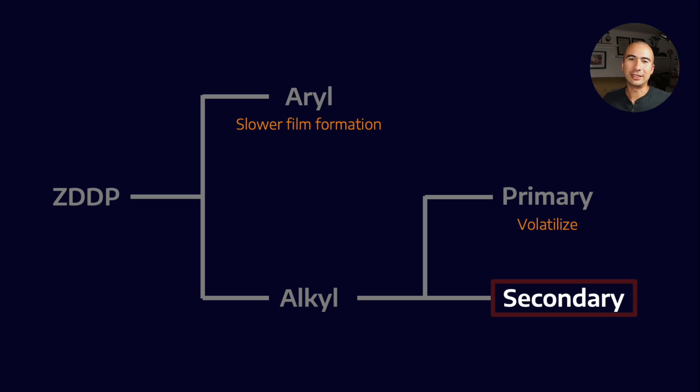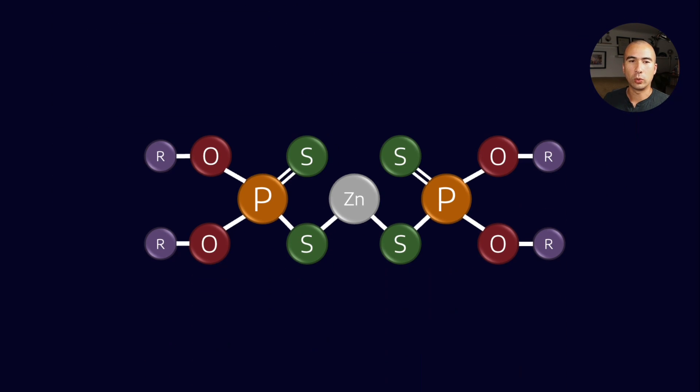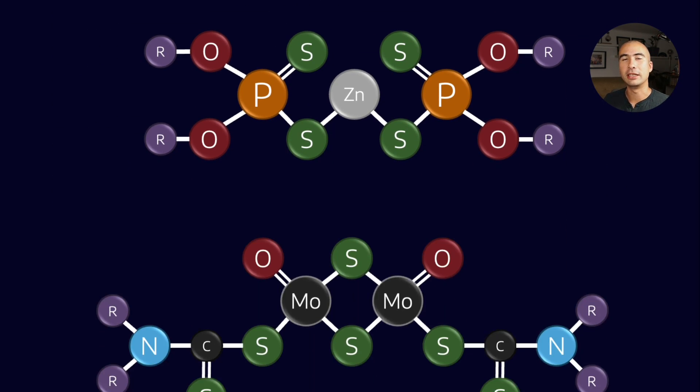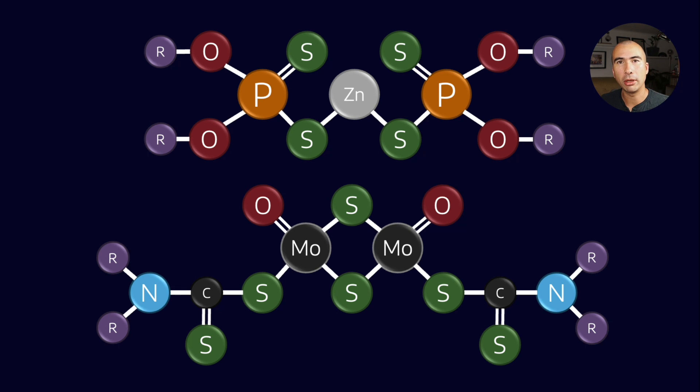Not only that, but you can't consider ZDDP in isolation. You have to look at how does it work, what we call synergistically, with other additive compounds. And one of the main ones that it tends to work really well with is something called molybdenum dithiocarbamate, or we just call it moly for short. Sometimes you'll see it shortened down to MoDTC. Now, molybdenum dithiocarbamate is also a multifunctional additive that performs anti-wear/friction reduction properties, as well as antioxidant properties. And it tends to work really well with ZDDPs.